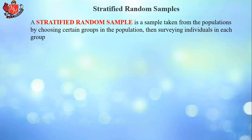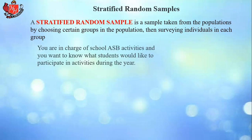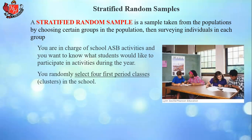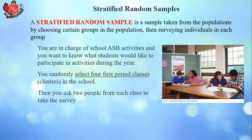A stratified random sample takes the cluster sample one step further. You randomly select four first period classes as before, but then you realize you don't need to ask everyone — you might ask two people from each class to take the survey. So you're making two cuts: first, which classes to look at, and then which students within those classes. Stratified just means layered random sample.